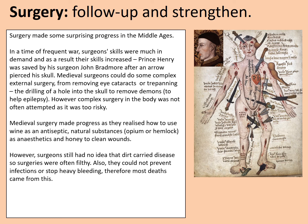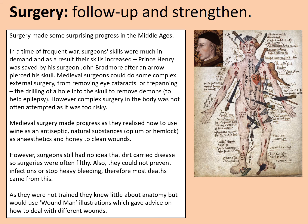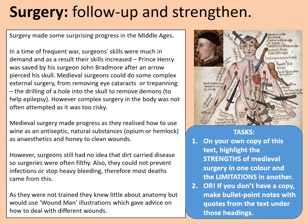Hemlock is a powerful poison, for example. Surgeons still had no idea that dirt carried disease, so surgeries were often filthy. A barber surgeon actually prided himself on the filthiness of his clothes — if he was covered in blood it showed he had performed those operations many times before, which would have provided some confidence. They could not prevent infections or stop heavy bleeding, therefore most deaths came from this. As they were not trained, they knew very little about anatomy, but would use the wound man — like the illustration shown — to give advice on how to deal with different wounds. Highlight the strengths of medieval surgery in one colour and the limitations in another, or make bullet-pointed notes under those headings.